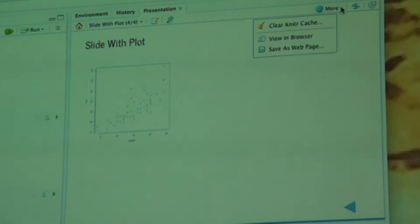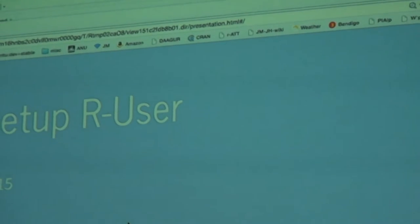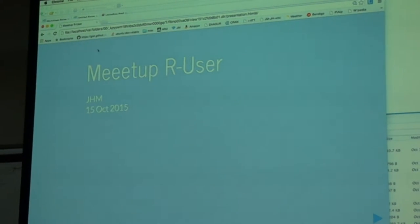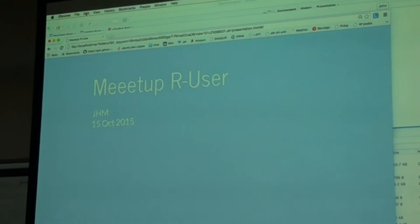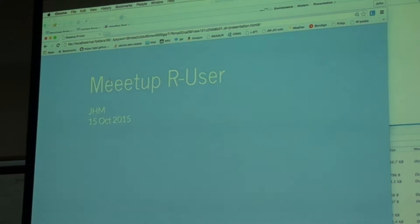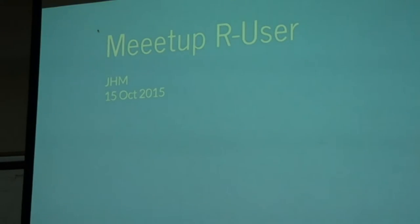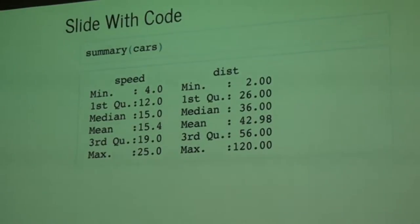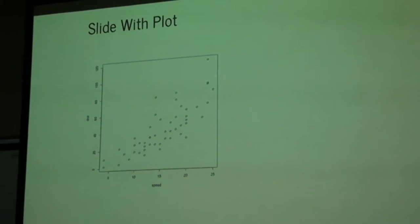And I can click on here and say 'view in browser' to get something that I can then use by way of a presentation. This is an HTML display actually. This works best in Chrome. I can go into presentation mode and you get a full screen presentation. And this is easily the easiest way that I know to prepare a presentation with or without R code.